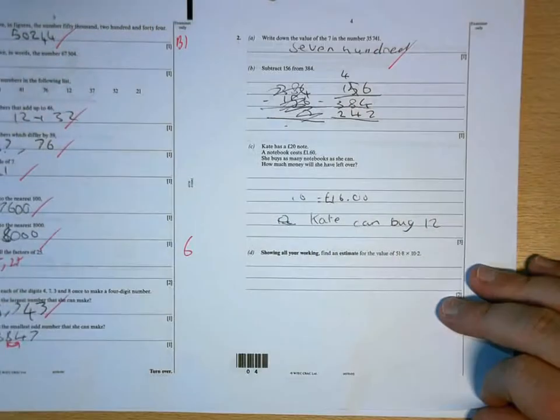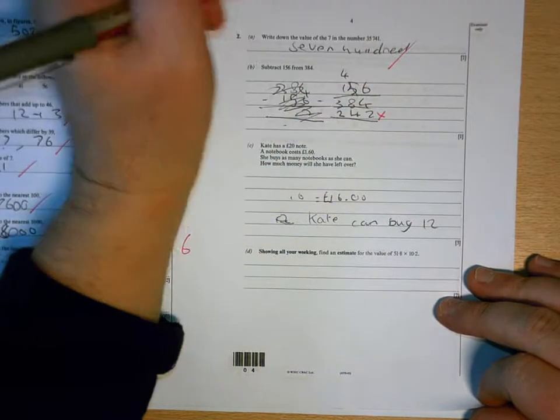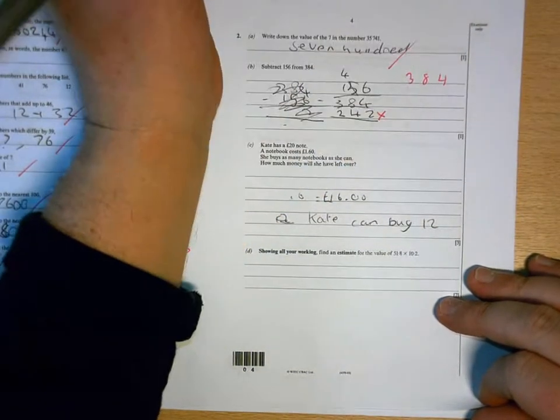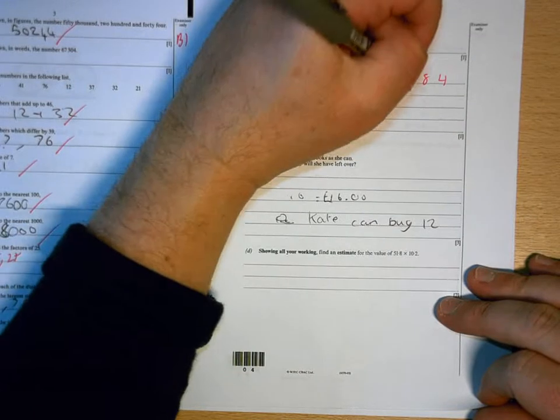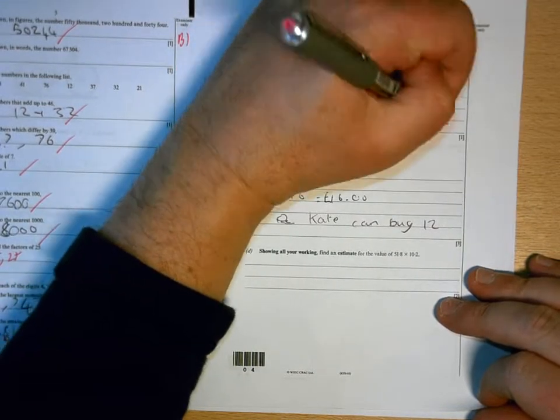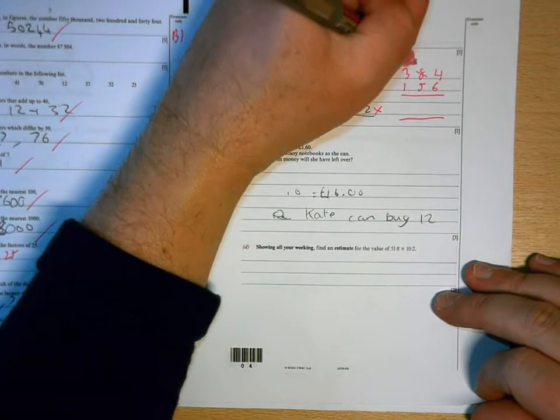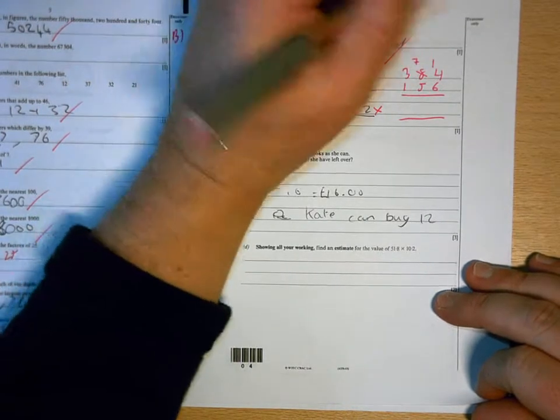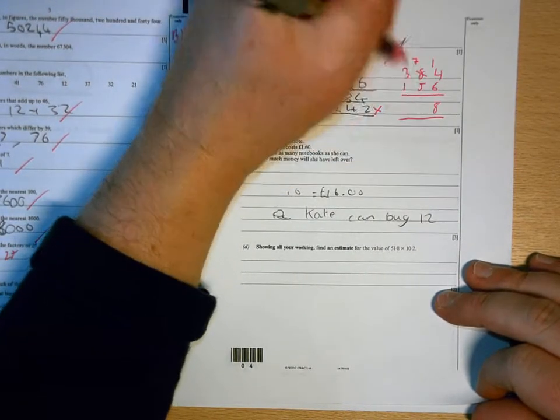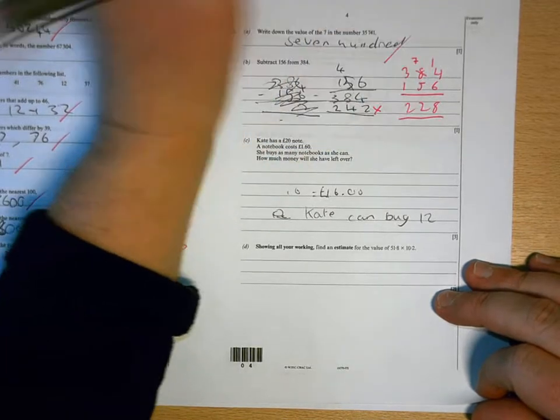700 is correct, that's not. So, 3, 8, 4, take 1, 5, 6. You can't take 6 from 4, so that becomes a 7. That becomes an 8, 2, 2.